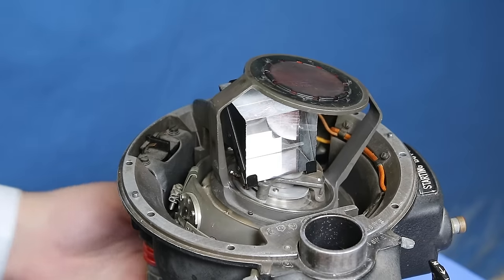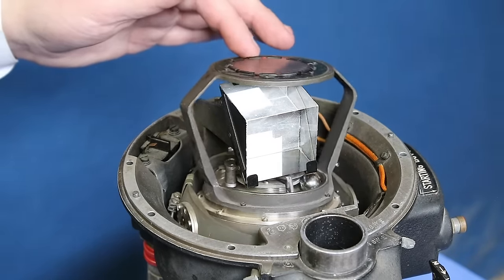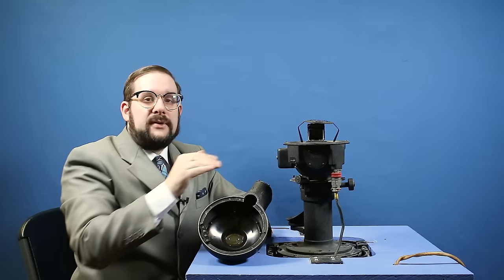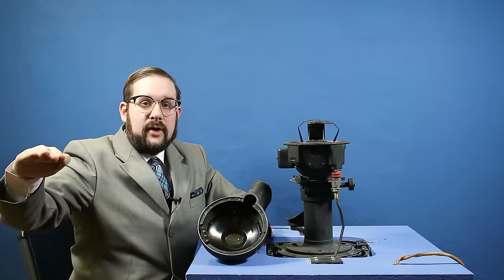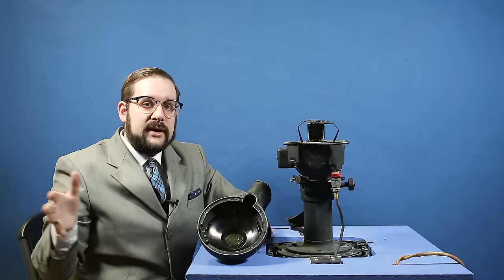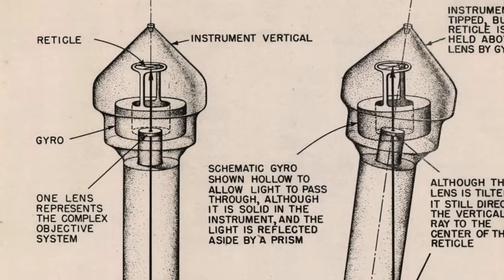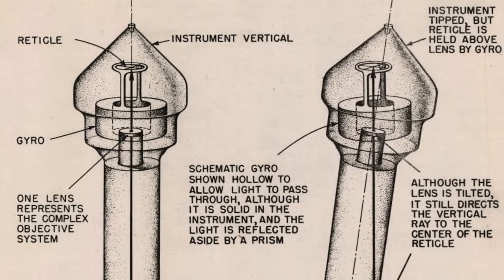The prism itself is mounted to the case of the instrument while the reticle is mounted to the gyroscope. What the gyroscope does is it keeps the reticle image parallel to the ground below no matter the motion of the aircraft, at least up to 25 degrees.